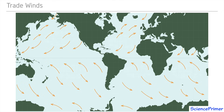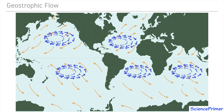Given the orientation of the wind in these areas relative to the direction the currents travel, it may look as if the wind directly creates the currents, but due to the influence of the Earth's rotation, the process that forms gyres is more complicated.